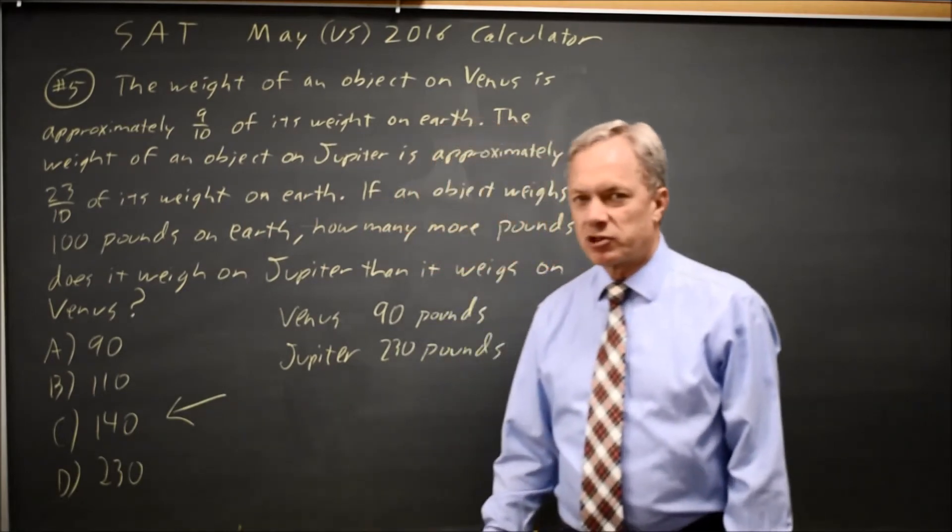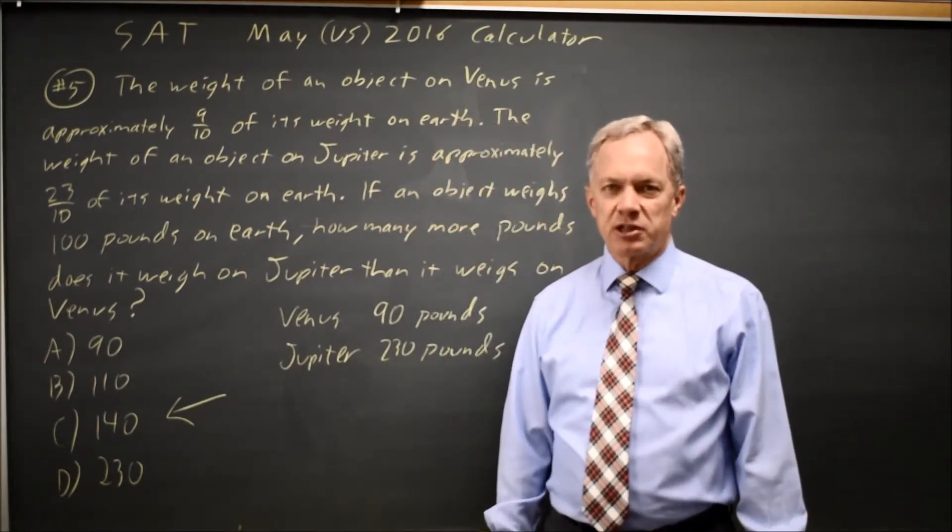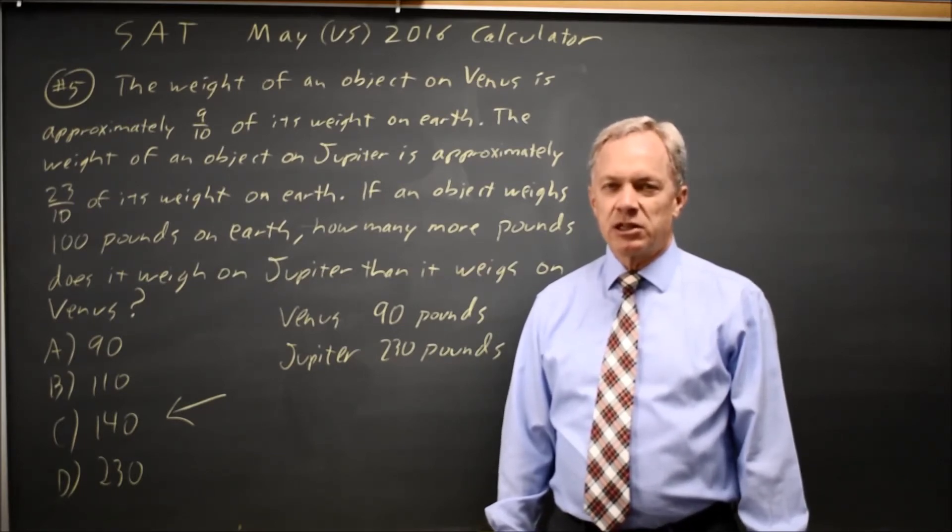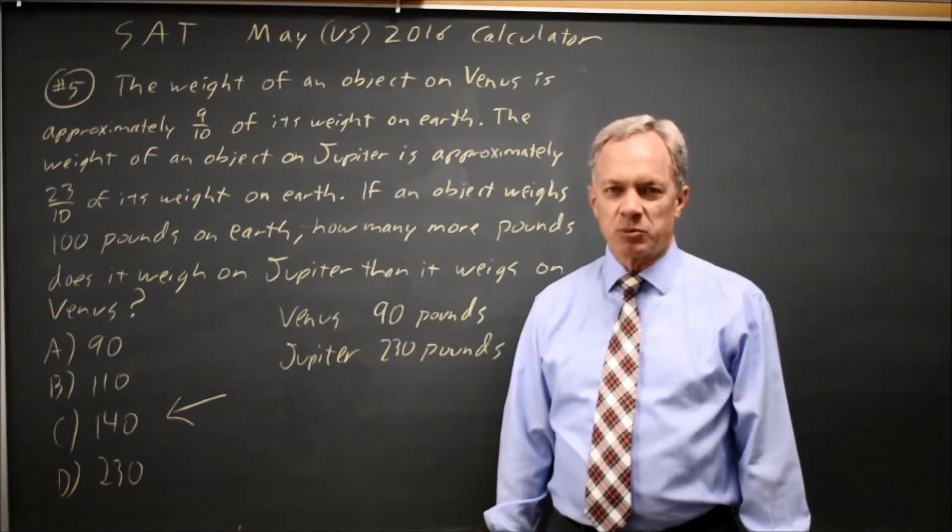The object weighs 140 pounds more on Jupiter than it does on Venus. This is a question dealing with proportions that asks you for the difference between the two numbers you find using proportions.